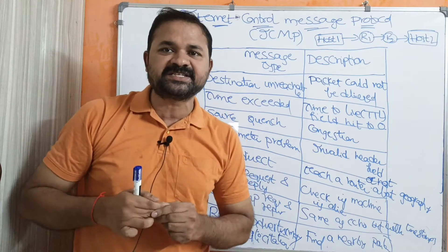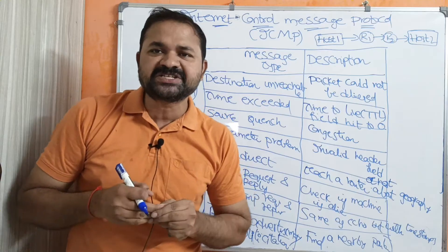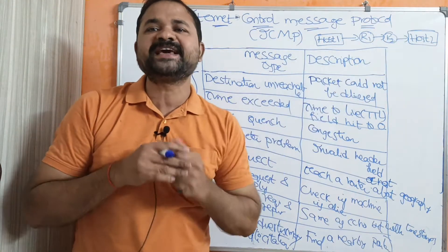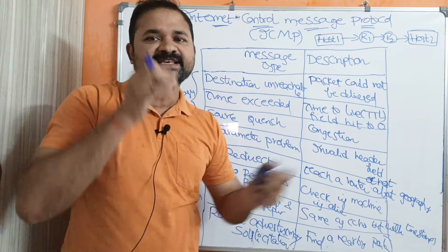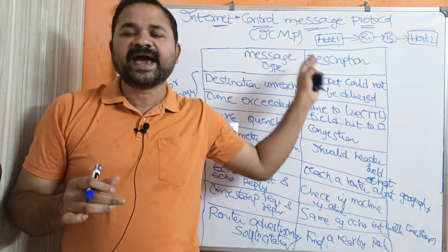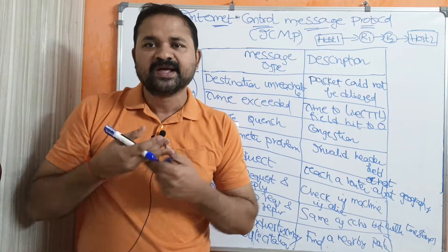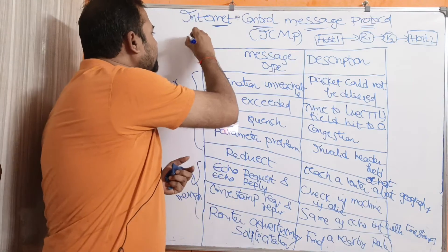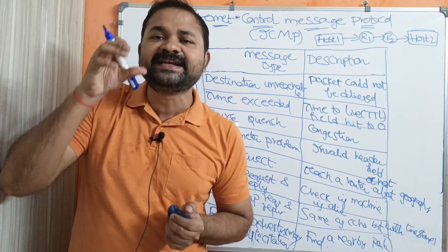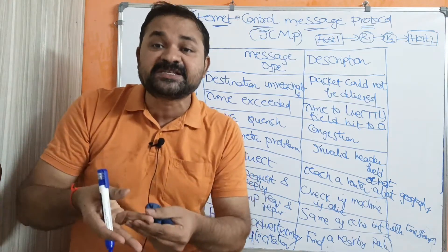Now let us discuss about ICMP. ICMP stands for Internet Control Message Protocol. This is also a network layer protocol. ICMP is always used along with Internet Protocol, that is IP. The problem with IP is it is a connectionless protocol.